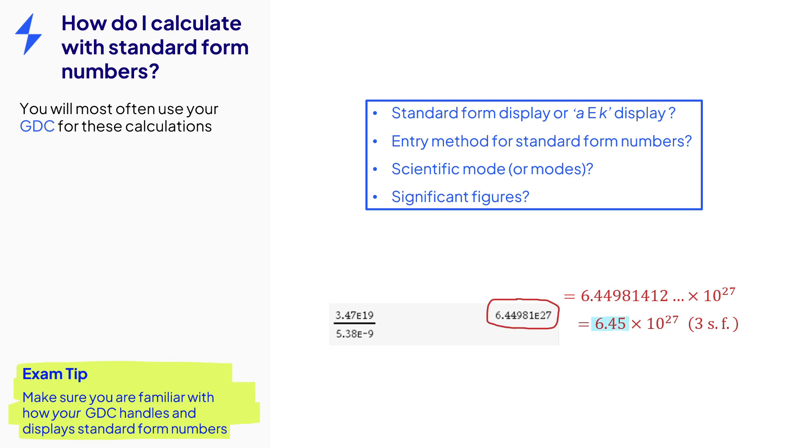And also note that the 6.45 here, the number part of the standard form number, that's the only part you need to round to three significant figures. You don't need to do anything with the power of 10 part.